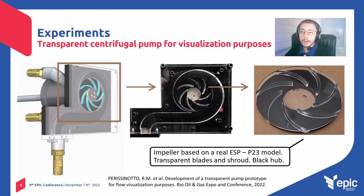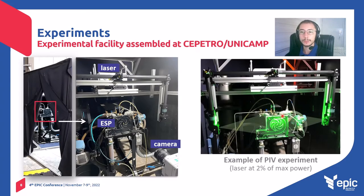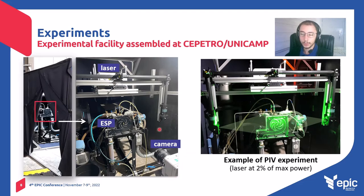We started our experiments by developing a transparent centrifugal pump for visualization purposes. This is the drawing of our new pump, and this is a photograph of the visualization section. The transparent pump is mounted in an experimental facility assembled at Sepetro Unicamp. This facility also has a laser generator and a camera, which compose the PIV system used in the experiments.